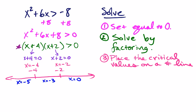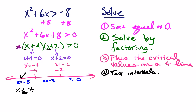When you plug in negative 5 and test the intervals, you can just do it in your mind. Negative 5 plus 4 is negative 1, negative 5 plus 2 is negative 3, and negative 1 times negative 3 is positive 3, and that is bigger than 0. So we give this a check mark — it works. That means all the numbers less than negative 4, so x less than negative 4, that whole interval will work.